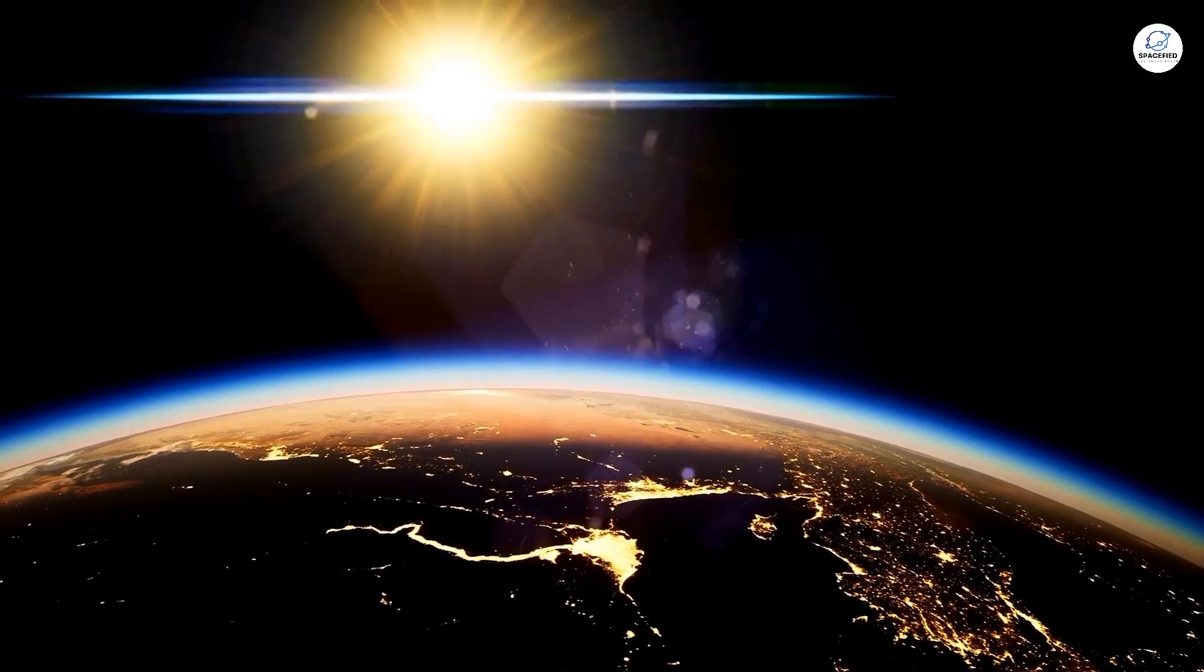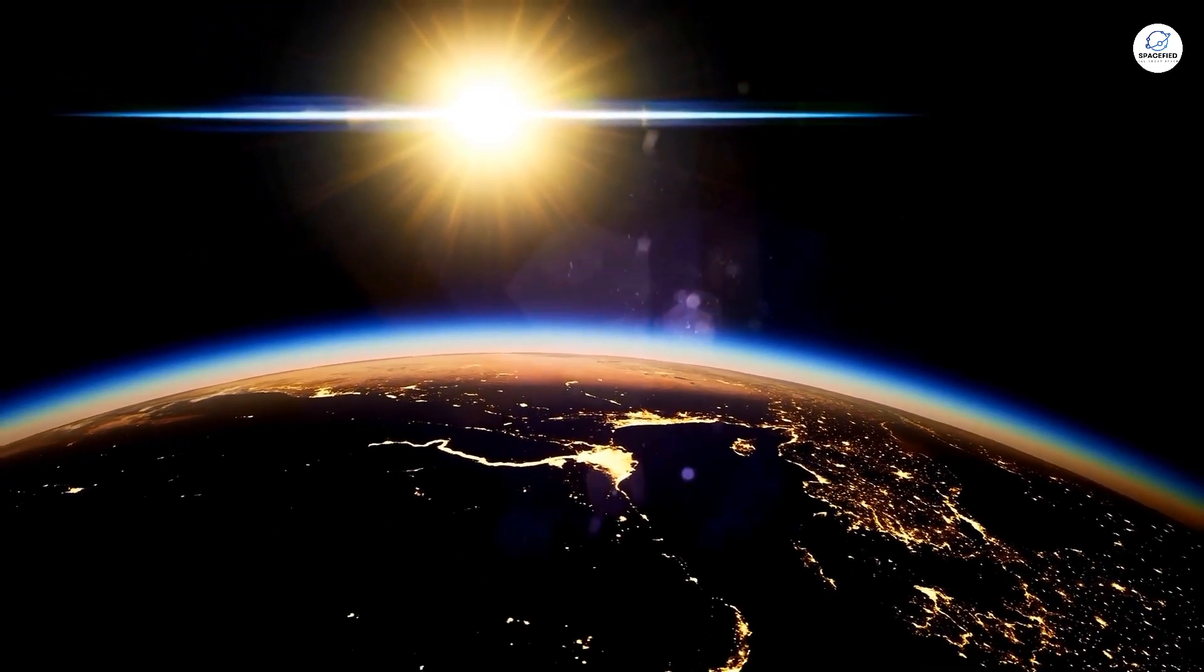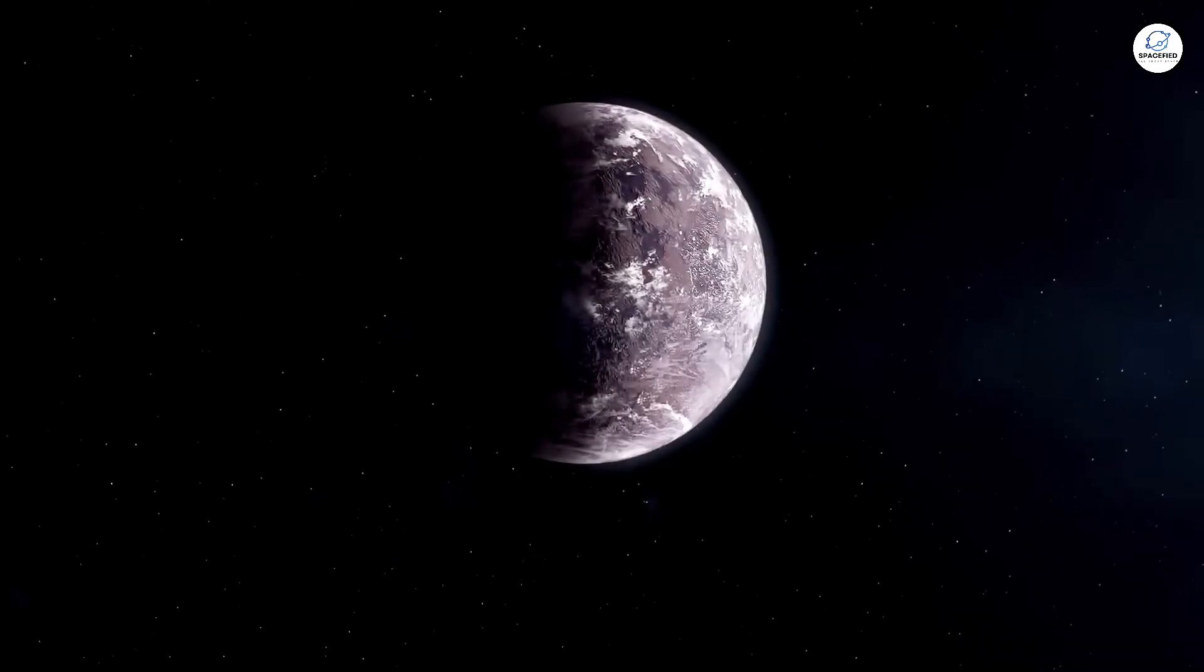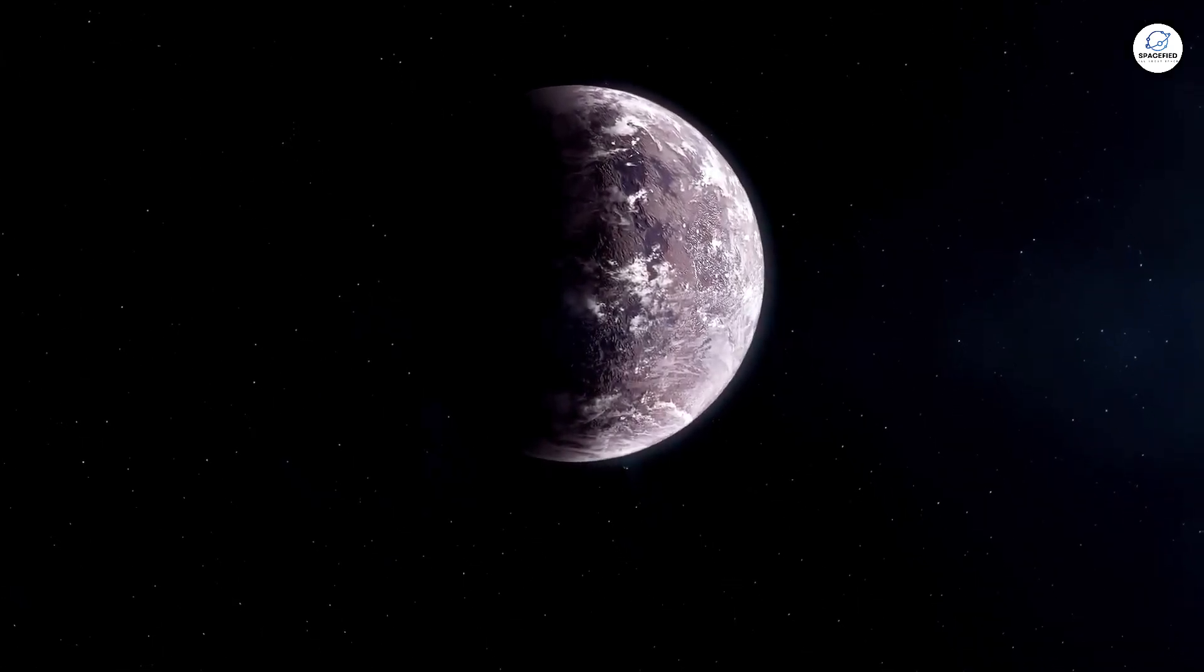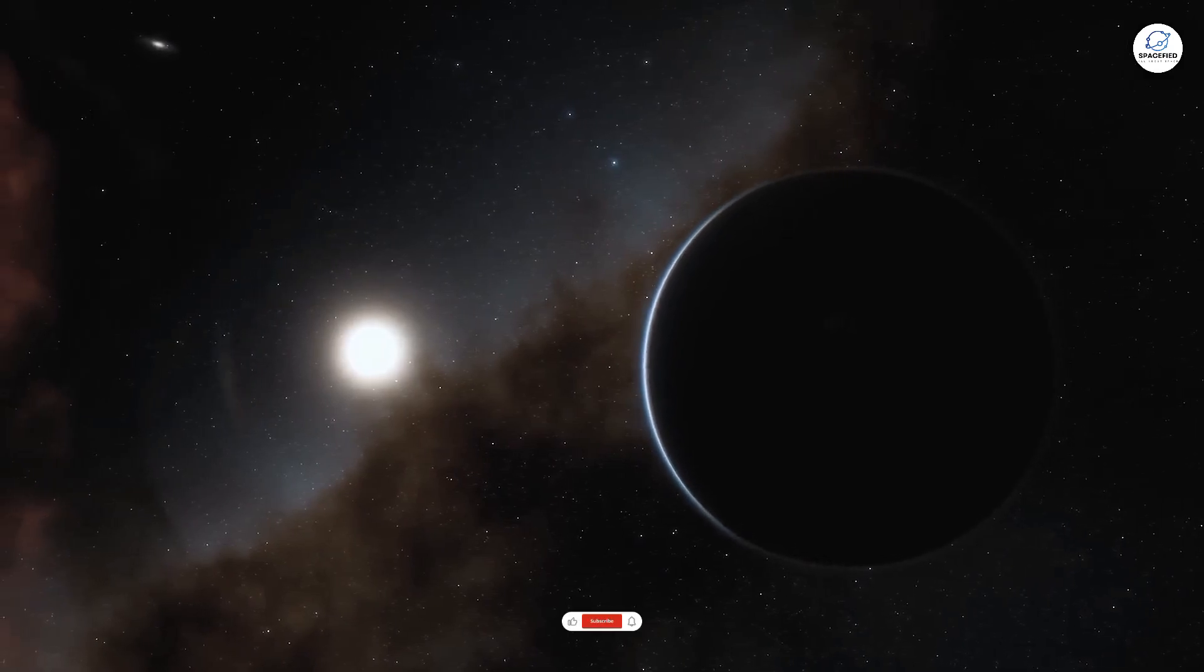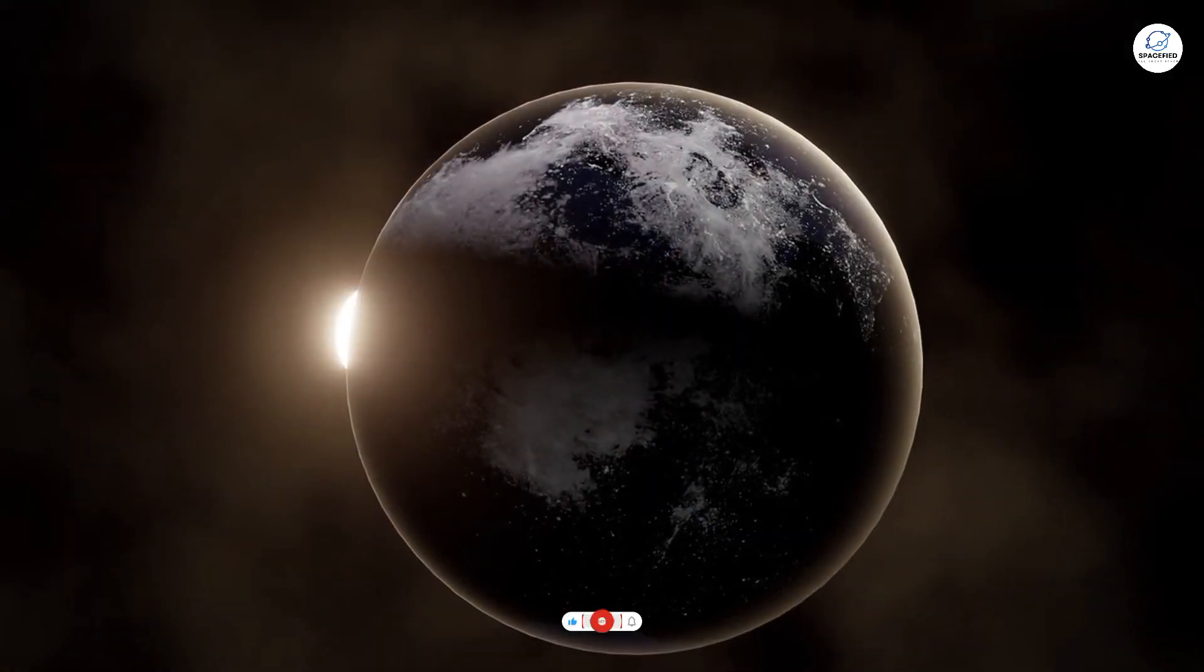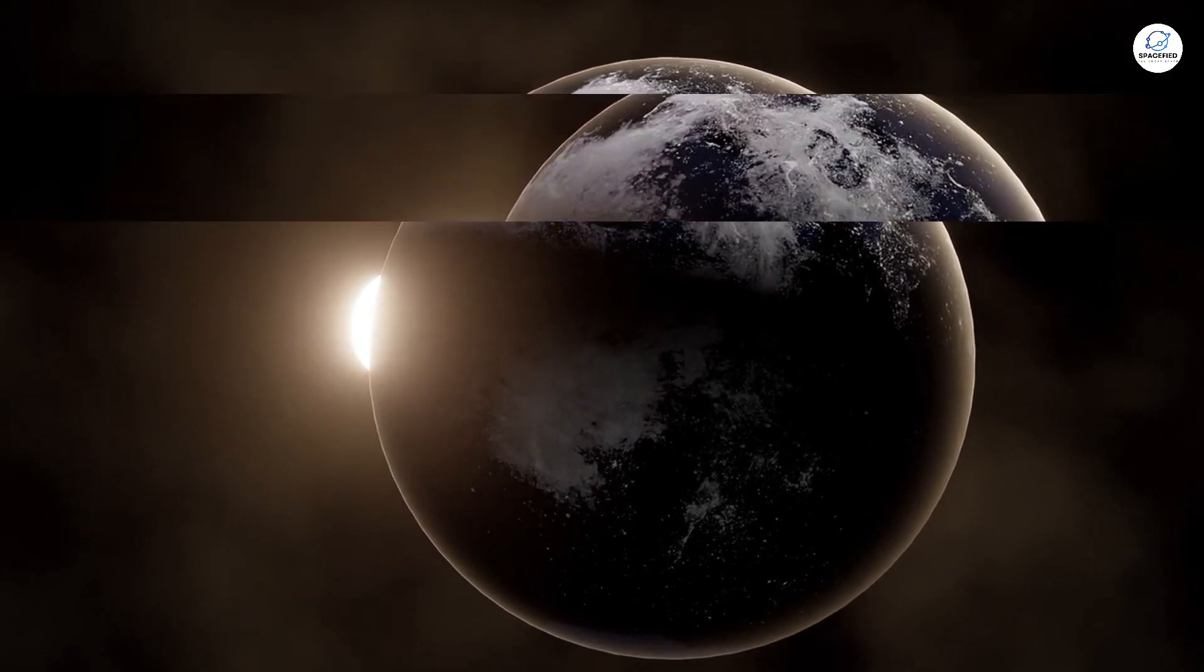But TRES-2b takes it to a whole new level. What's even stranger is that it's incredibly close to its star, just 4 million kilometers away. That's 10 times closer than Mercury is to the Sun.